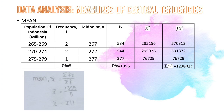For data analysis under measure of central tendencies, the sum of frequency is 5 and the sum of fx is 1355. The formula for mean is sum of fx divided by sum of f. The mean is 271 million.